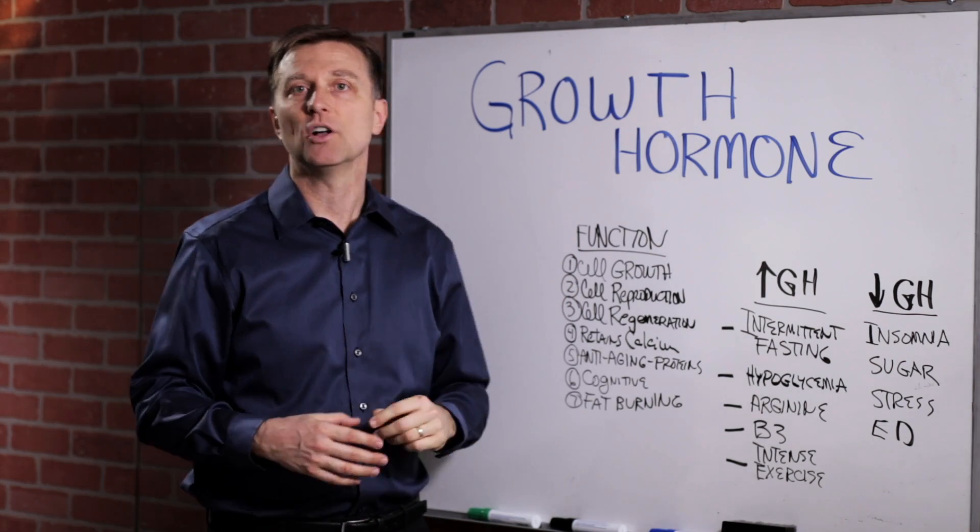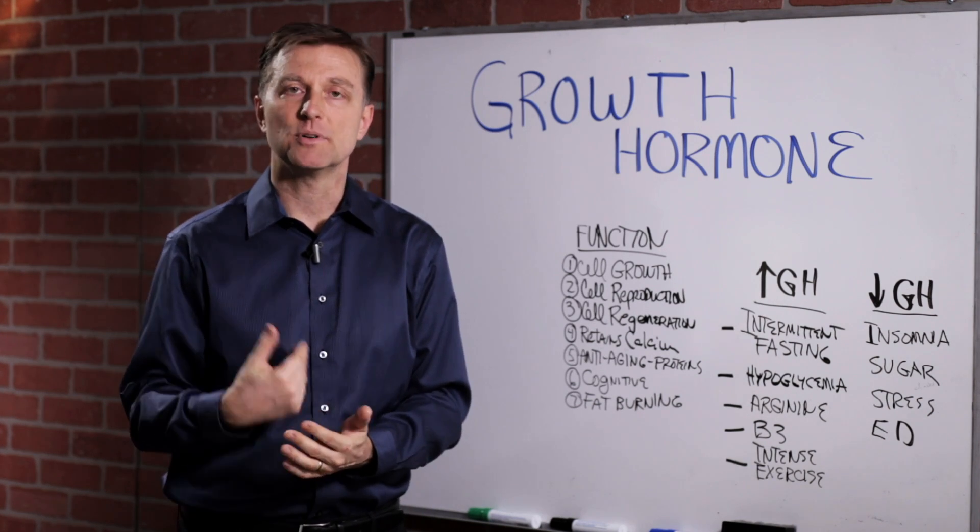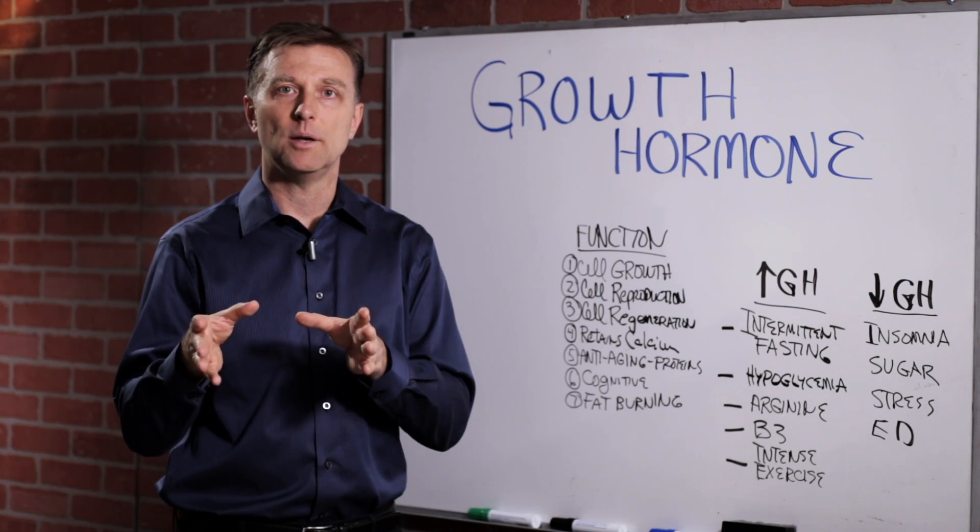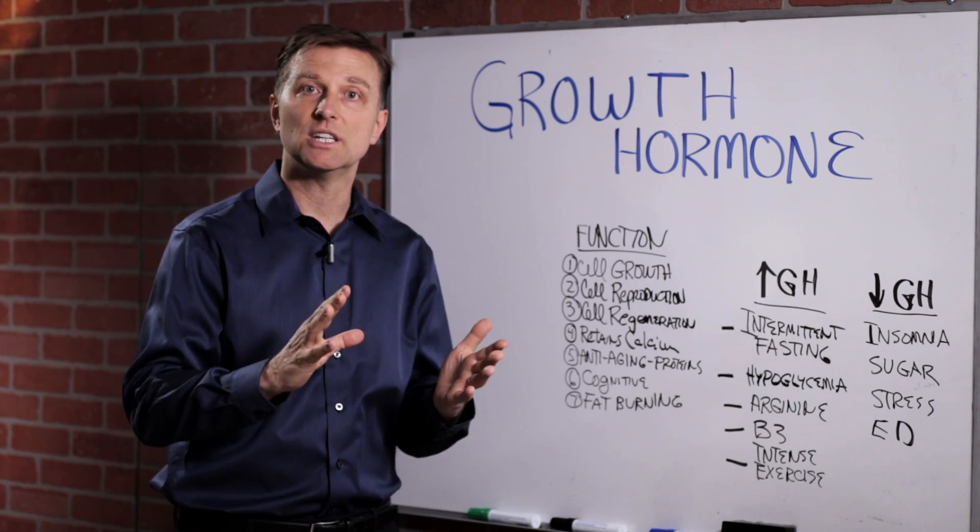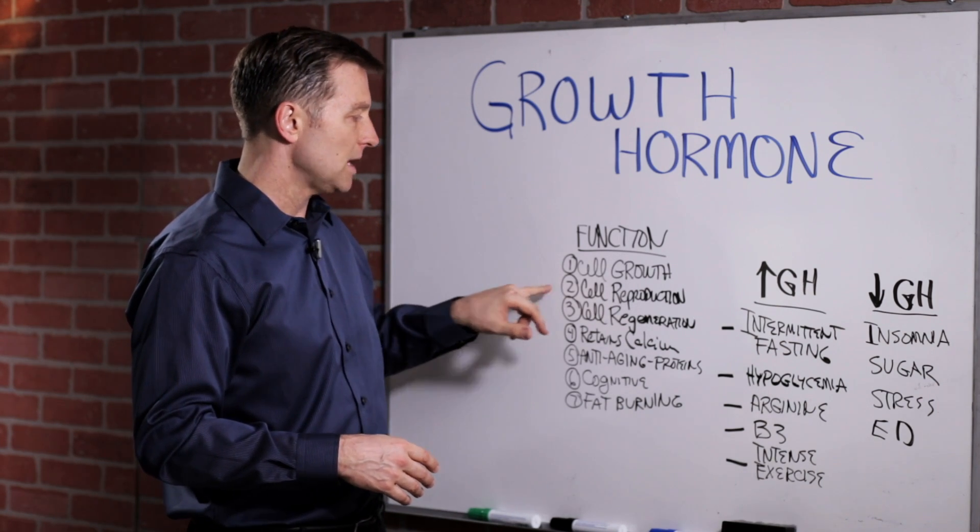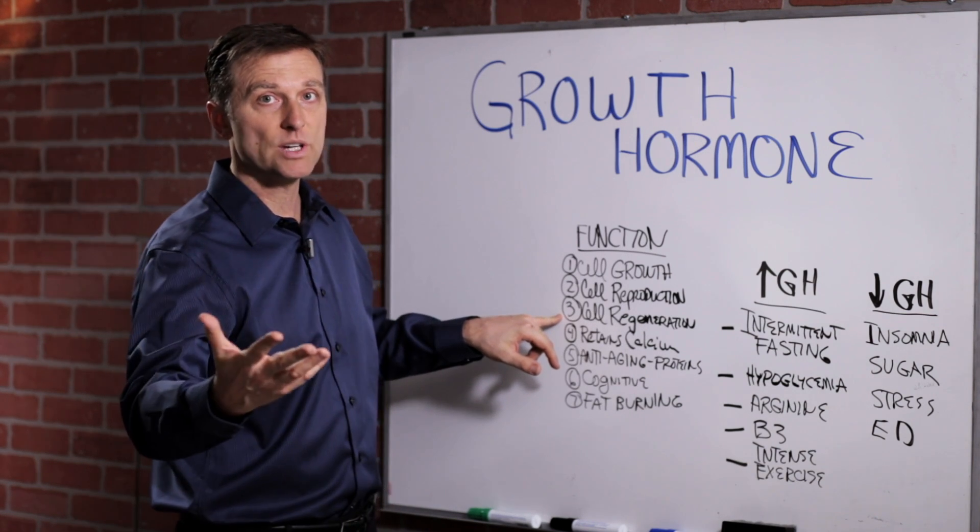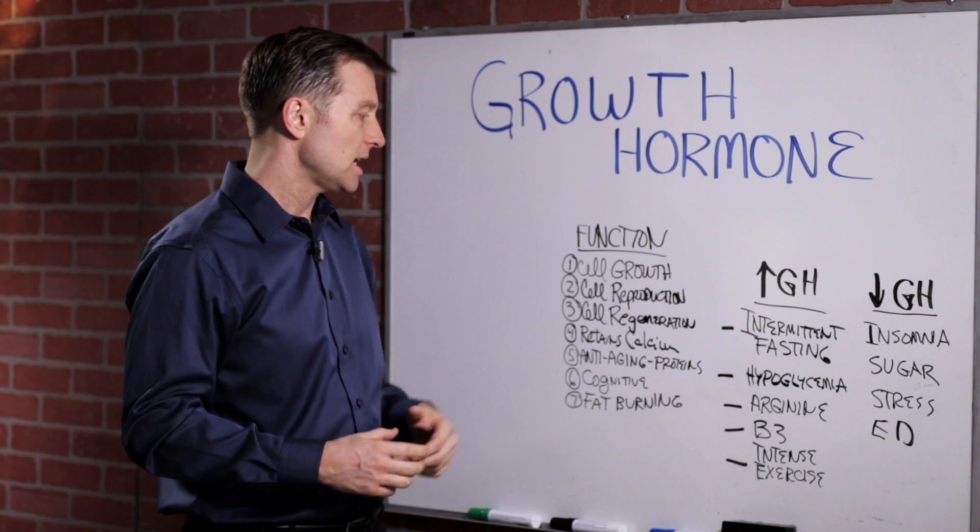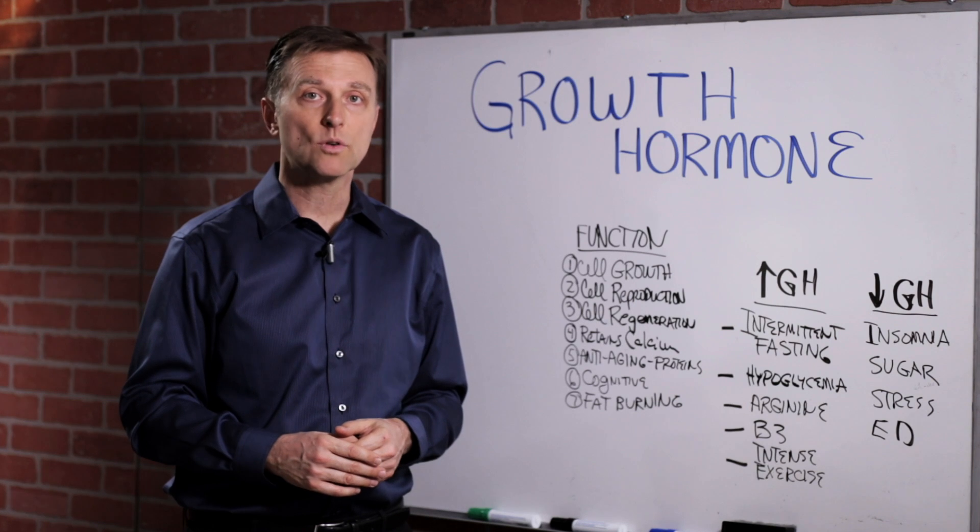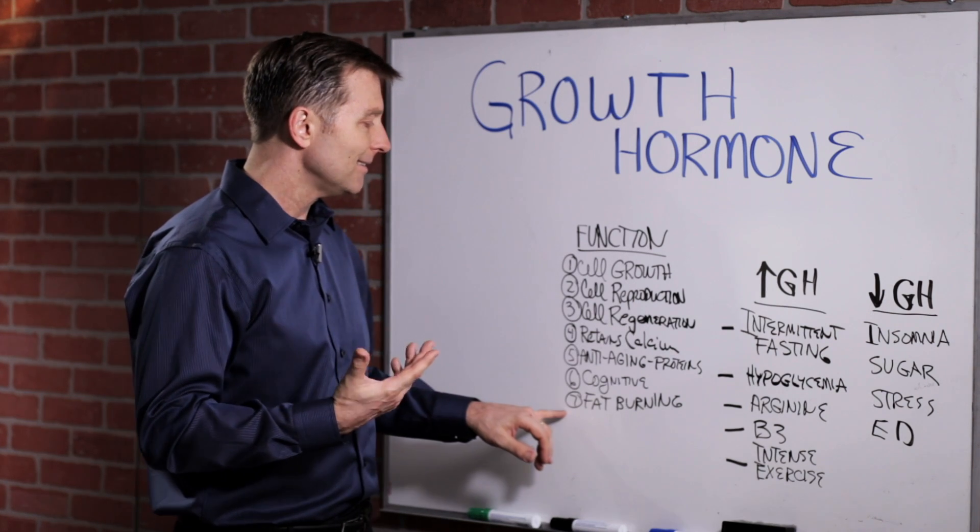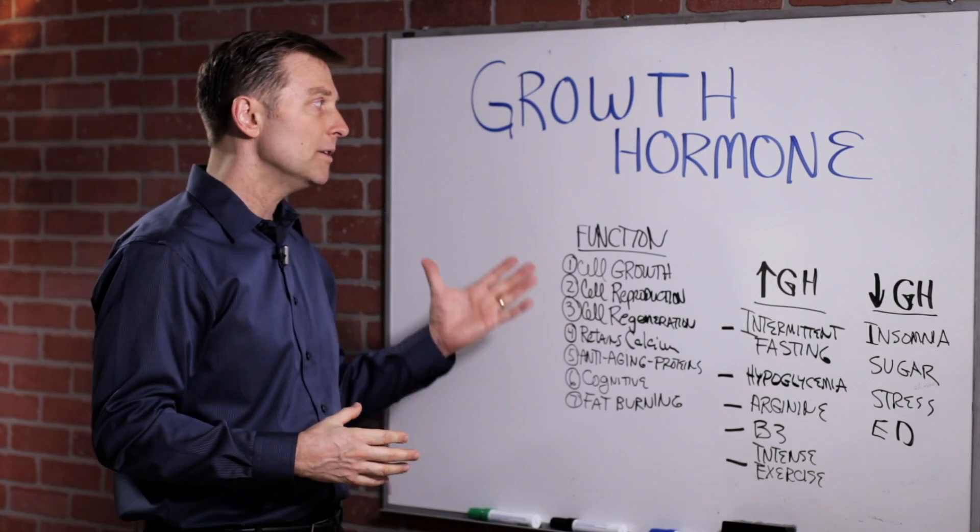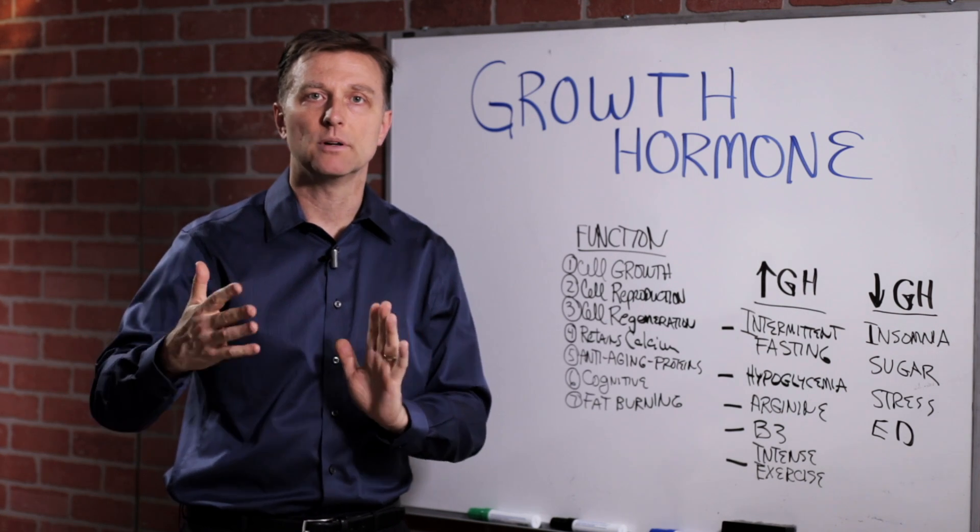So growth hormone is the ultimate anti-aging hormone because it preserves the skin, the tendons, and it just keeps things flexible. And if you're losing protein, if you're becoming more rigid in the arteries, you get high blood pressure and your body falls apart. So it's for cell growth, cell reproduction, cell regeneration after injury, after stress. It also helps you retain calcium. It's involved with cognitive function. People that are low in growth hormone have memory loss. But I think the other thing is that it's really special in affecting fat burning.